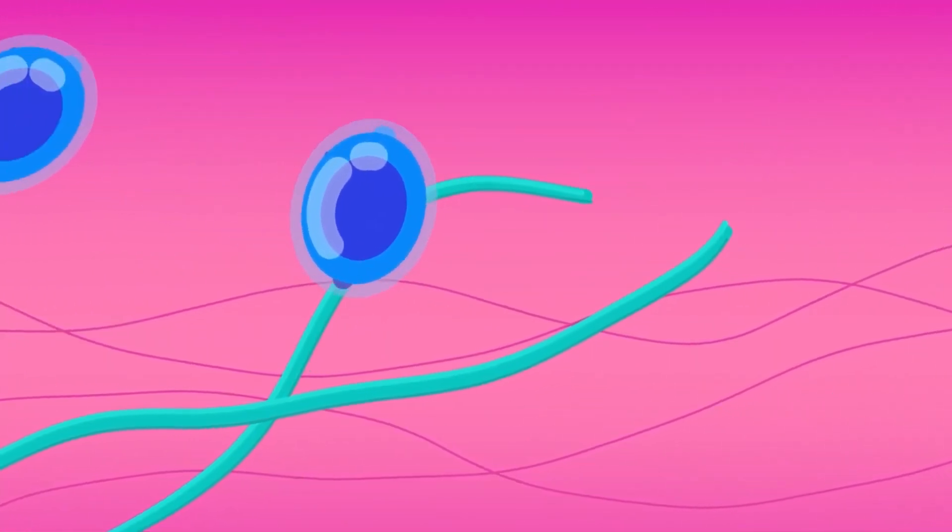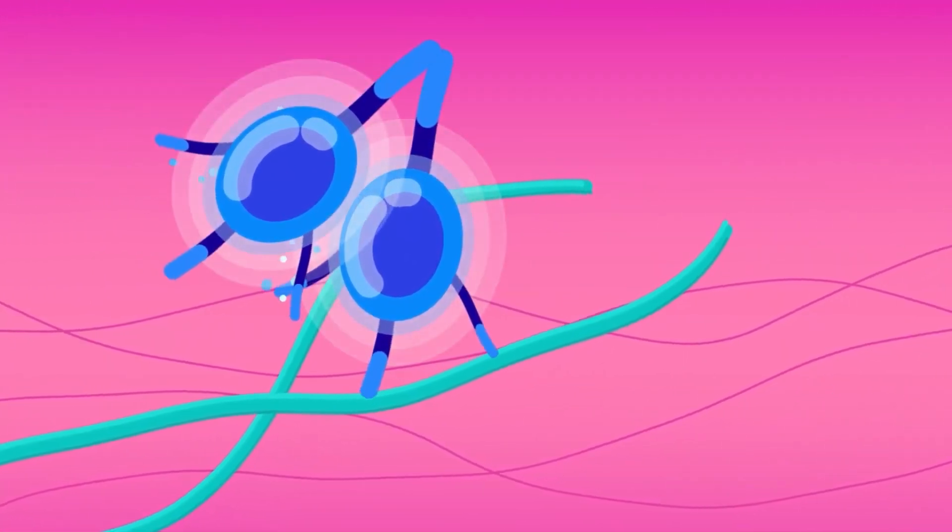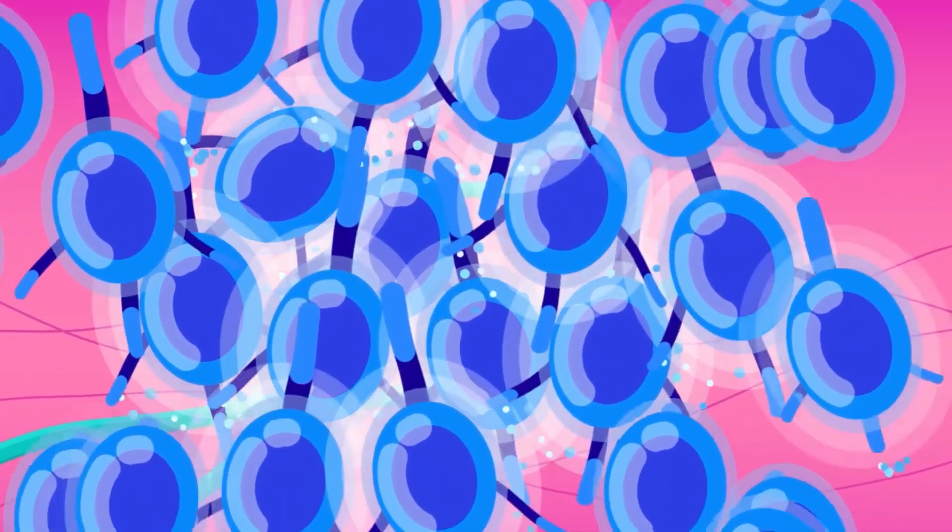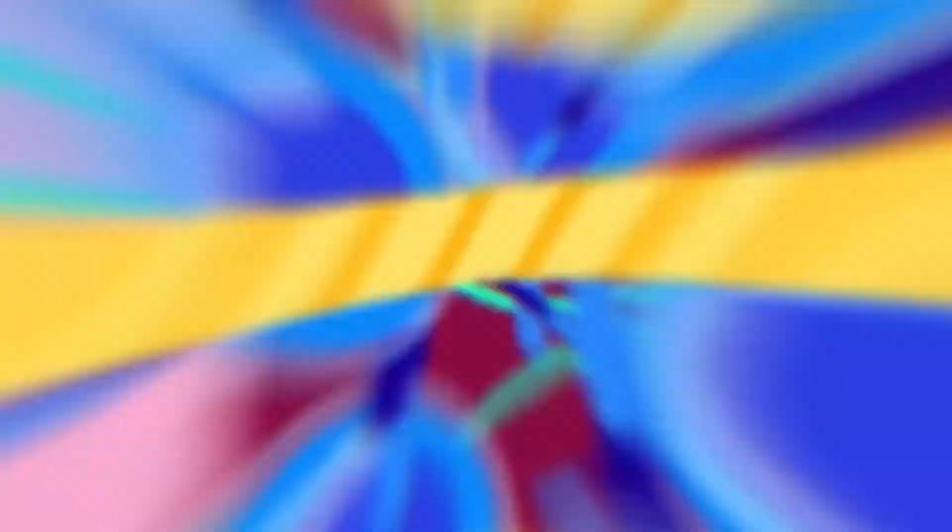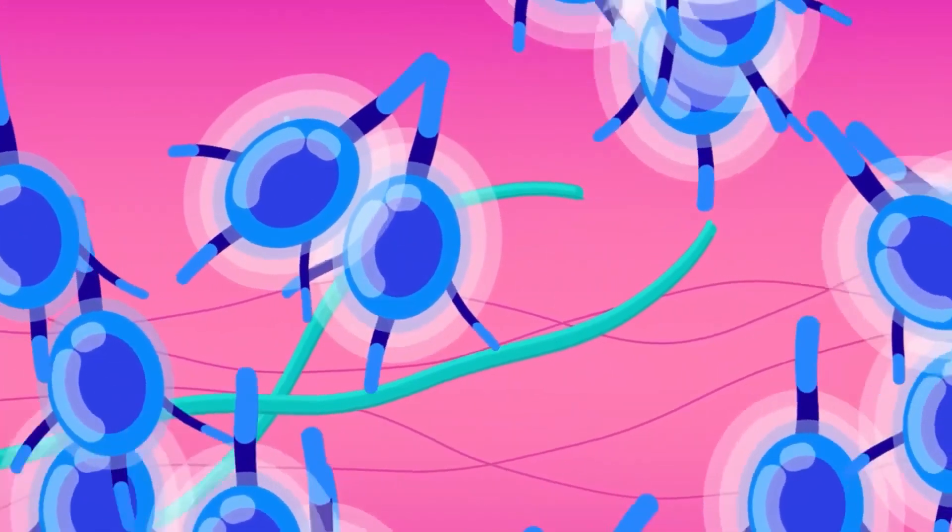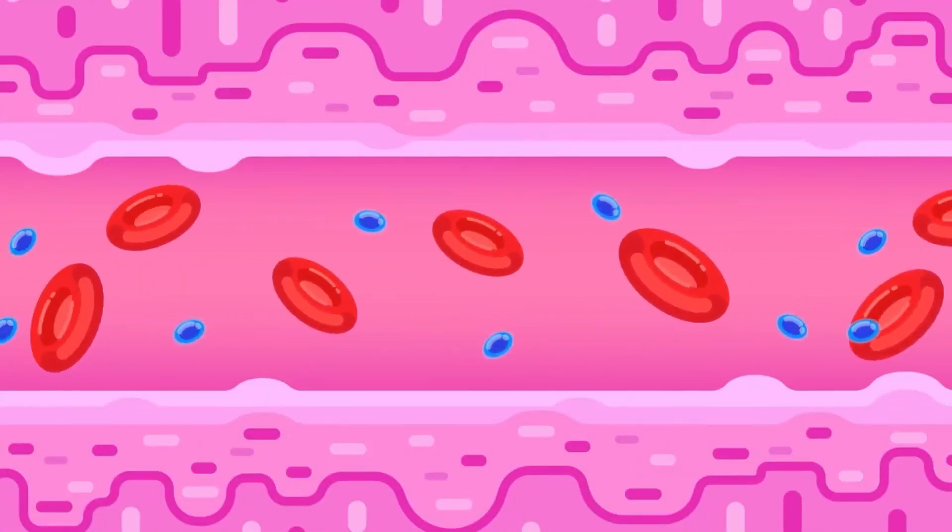While producing signaling molecules at the same time, the increased number of molecules recruit even more platelets that now produce a vast amount of signaling molecules. The loop continues until the wound is closed and sealed by the fibrin molecules. Watch the more detailed explanation in our sister channel. Later on, some of the signaling molecules also induce the release of molecules that break down the clot, so it doesn't become detrimental to the blood flow.